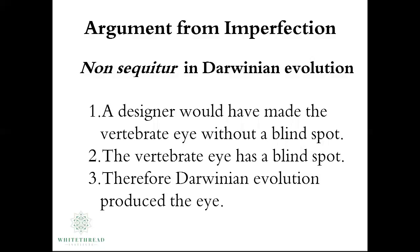There are three components of this syllogism. First: a designer would have made the vertebrate eye without a blind spot. The vertebrate eye has a blind spot. Therefore, Darwinian evolution produced the eye. This syllogism can be generalized to any biological trait by saying a designer would have made the biological trait without an apparent imperfection; the biological trait has an apparent imperfection; therefore, Darwinian evolution produced the biological trait.